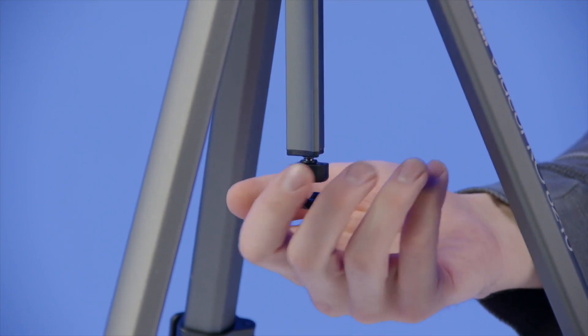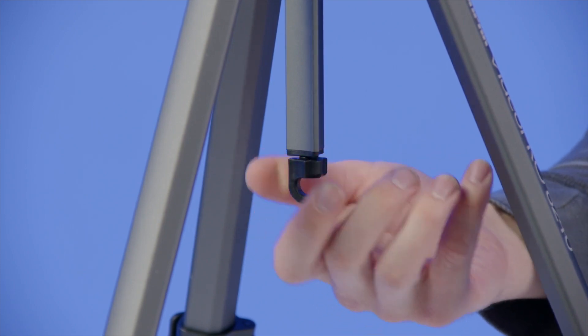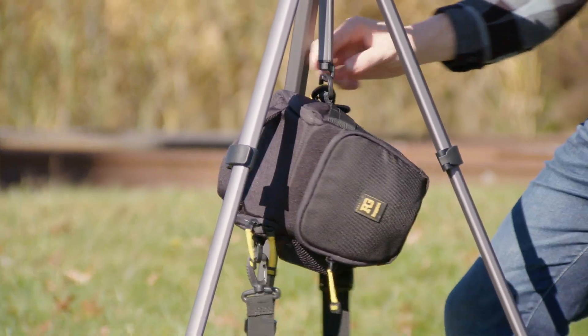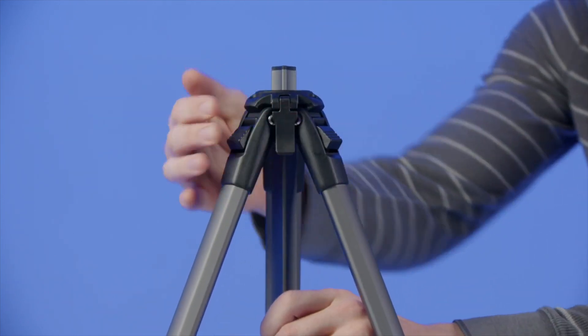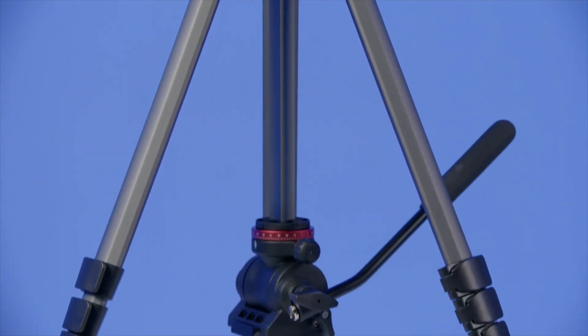The center column comes with a removable accessory hook to attach to your camera bag or other accessories. You can reverse the center column to allow for shooting at ultra-low angles or even shooting straight down.